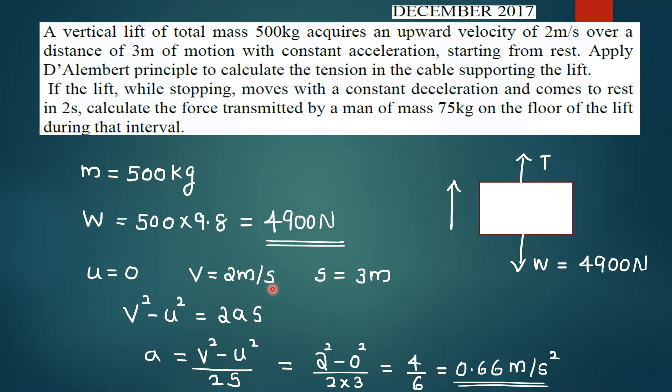If the lift while stopping moves with a constant acceleration and comes to rest in 2 seconds, calculate the force transmitted by a man of mass 75 kg on the floor of the lift during that interval.